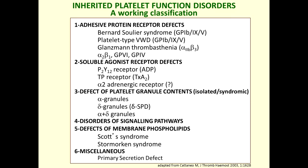The inherited platelet function disorders may be divided into these groups. First, adhesive protein receptor defects — conditions in which a major platelet surface receptor that binds to adhesive proteins is lacking. These are essentially receptors for von Willebrand factor, fibrinogen, and collagen. They include Bernard-Soulier syndrome, a loss-of-function mutation of the GP1-B complex which binds von Willebrand factor; platelet-type von Willebrand disease, a gain-of-function mutation of the same receptor; Glanzmann thrombasthenia, where the fibrinogen receptor integrin alpha-2b beta-3 is defective; and rarer conditions with defects in collagen receptors alpha-2b beta-1, GP6, and GP4.